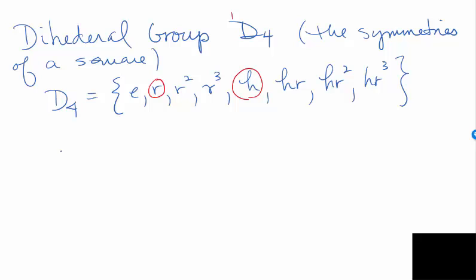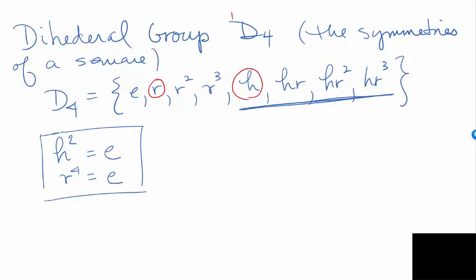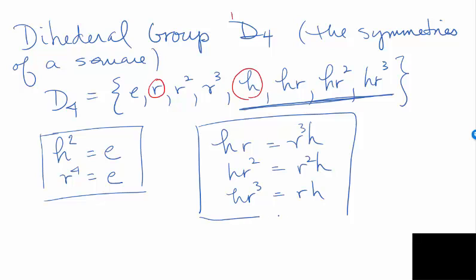Let me give you the calculation rules for this group. If you flip twice, you're back to the identity, so H² = E. Since R⁴ is a 360-degree rotation, R⁴ = E as well. The other operation rules are: HR = R³H, HR² = R²H, and HR³ = RH. You verified these yourselves in class and saw that they were true.